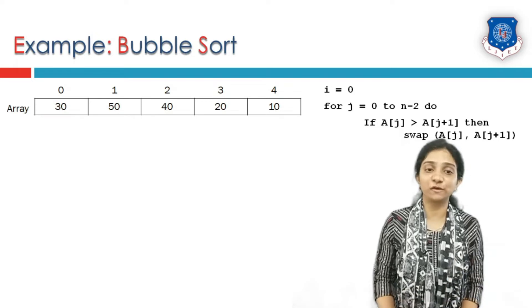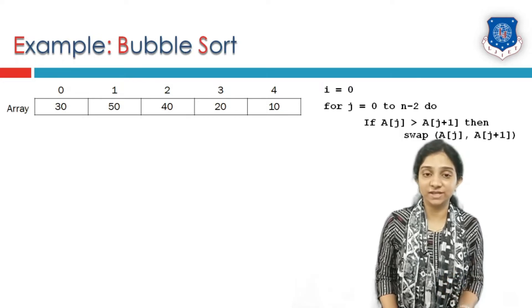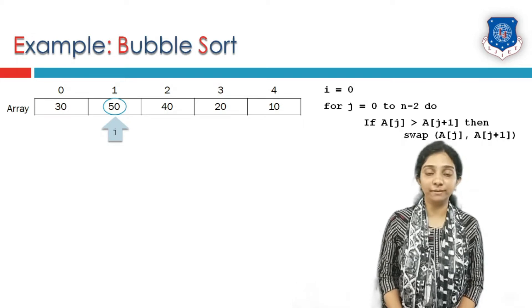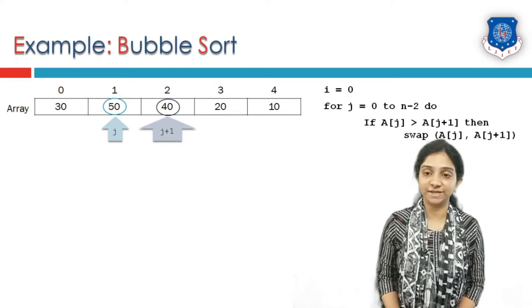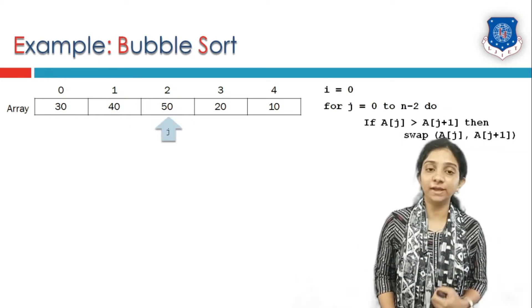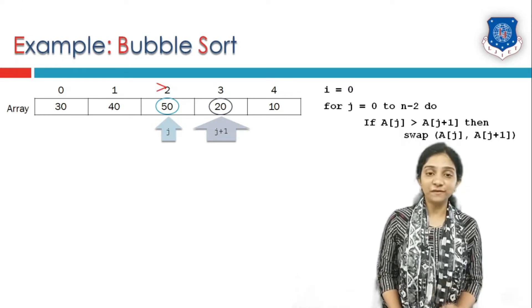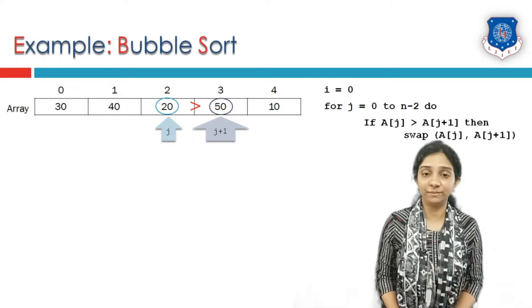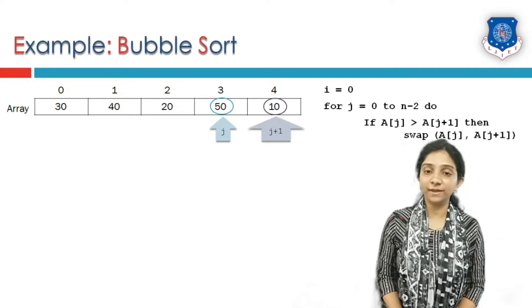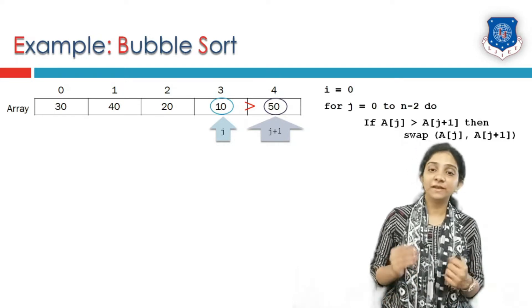Inside this loop, for each index of j, we compare element a[j] with element a[j+1]. If the element at j is greater than j+1, we swap them. Now j is pointing to index 1, compared with j+1 which is element 40. Is 50 greater than 40? If true, we swap. J is incremented; now j points to element at index 2 and j+1 is at index 3. Is 50 greater than 20? If yes, swap. Again increment j; now j points to element at index 3 and j+1 is at index 4. Is 50 greater than 10? If condition is fulfilled, swap these elements.